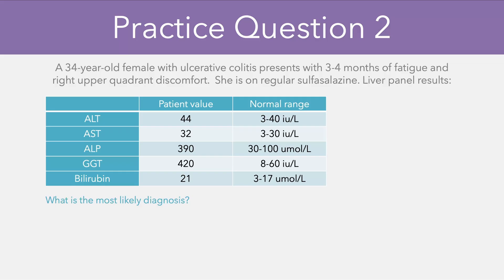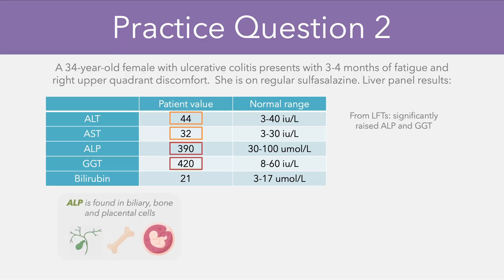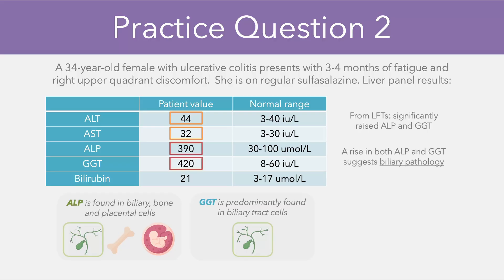In this case, the patient has quite a significant rise in their ALP and GGT levels, and while there is a rise in the ALT and AST as well, it's not as profound. Going back to first principles, we know that ALP is found in the biliary cells, bone, and placenta, while GGT is found predominantly in the biliary tract. Because we have a rise in both ALP and GGT, it's most likely some form of biliary pathology. The patient has a background of ulcerative colitis and a chronic history, suggesting a more inflammatory process — and the most likely diagnosis would be primary sclerosing cholangitis.